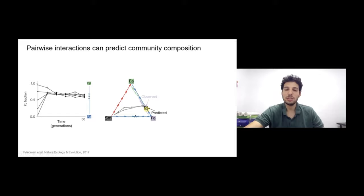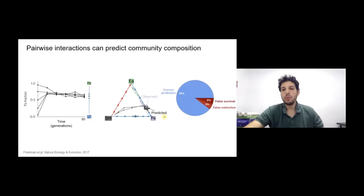This is one example, and we wanted to know whether it's typical or an unusually good one. So we repeated this for over 50 trios, which enabled us to make a statistical statement: in about 90 percent of these trios, we were able to accurately predict the trio composition from the pairs.